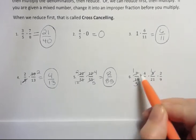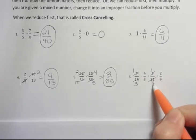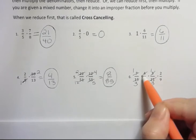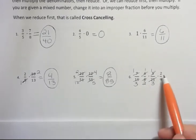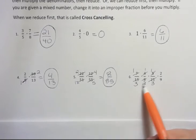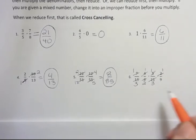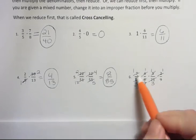7 goes into itself once and into 21 three times. 4 goes into itself once and into 8 twice. The only thing I have left on the top is a 2. But I have this 2 down here, so I can say that goes into itself once and once down there.